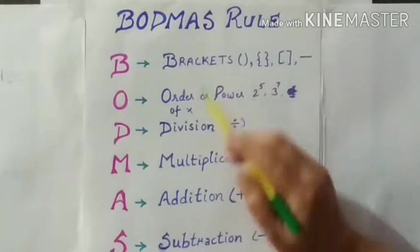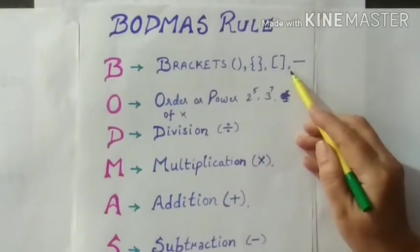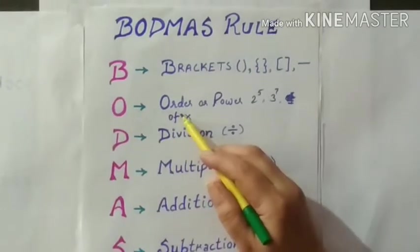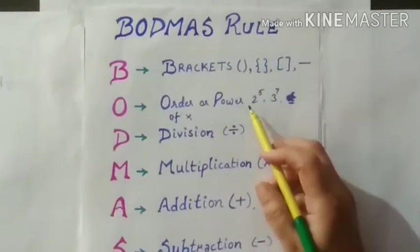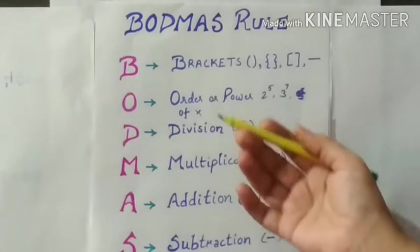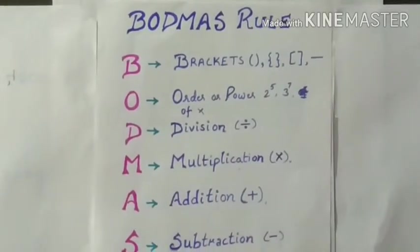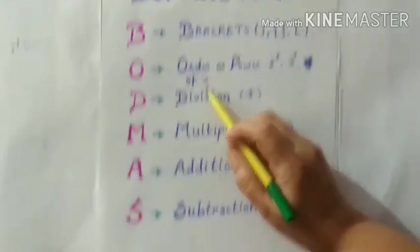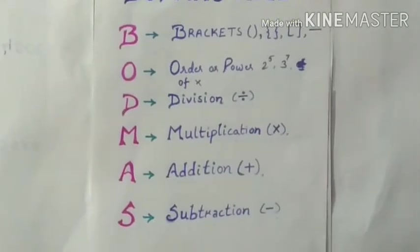B stands for brackets. There are different types of brackets you can see in your numerical expressions. O stands for order or power. This can be represented like this also. But we feel as in 6th standard this will be a very easy format. As here O stands for off. Off means multiply.